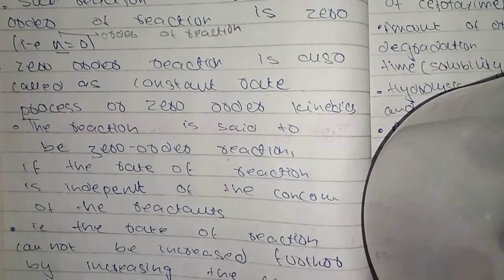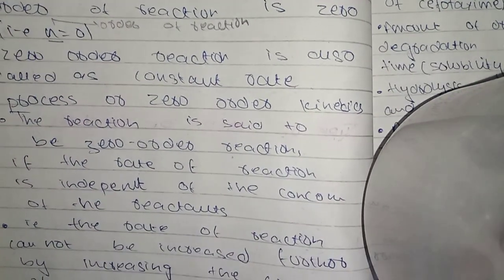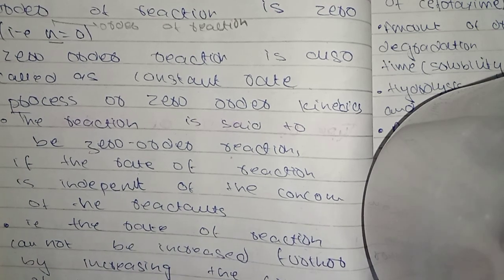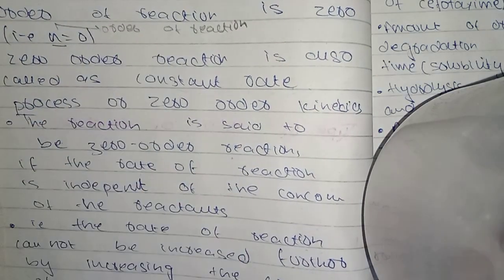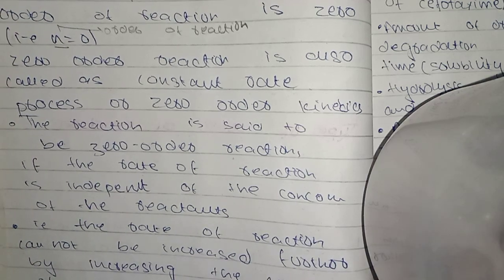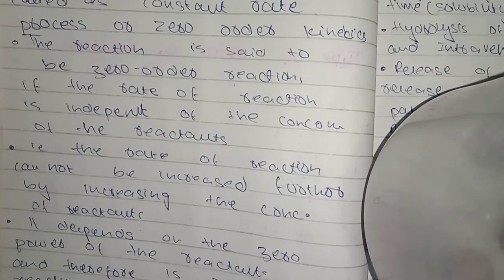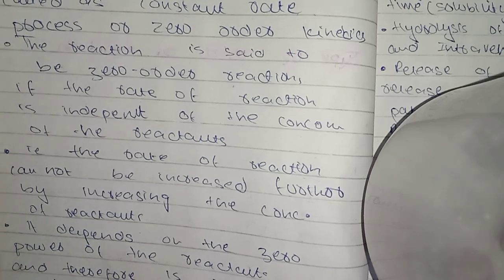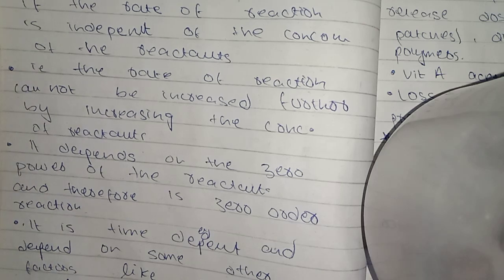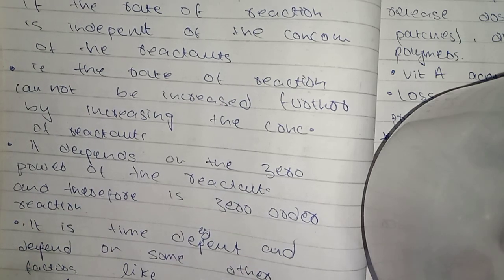We said that the concentration will not depend on the concentration. The rate of reaction cannot be increased by increasing the concentration. The rate of reaction depends upon the zero power of the reactant, that is why we call it zero order reaction. It is time dependent and depends upon some other factors.